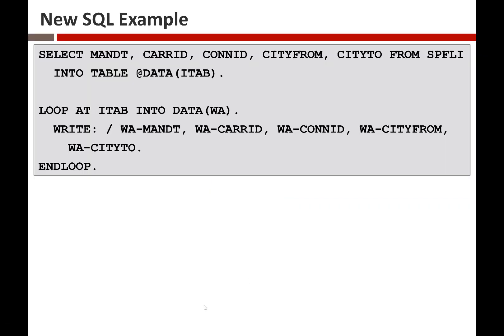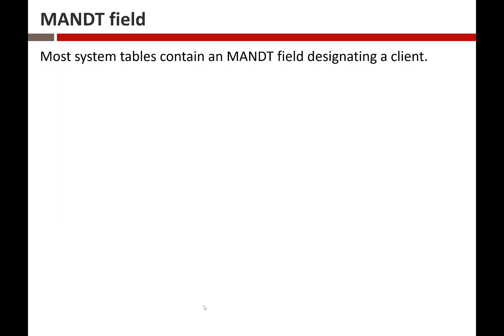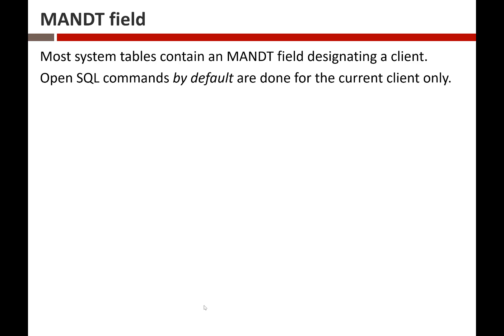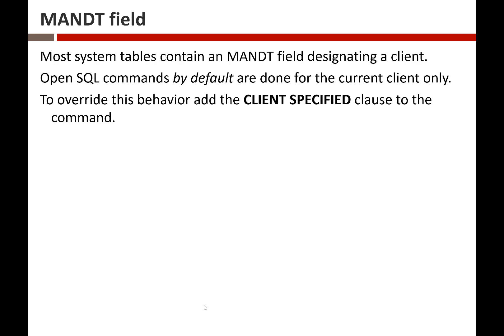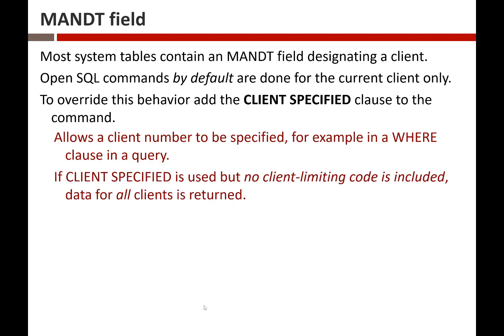Let's go back to what I was talking about with the MANDT field. Most system tables have a MANDT field that designates the client number. OpenSQL commands by default are done for the current client only. To override this behavior, we add the CLIENT SPECIFIED clause to the command. What this does is allow us to specify a client number. Or if I don't specify a client number, I get back all of the clients. If CLIENT SPECIFIED is used but no client limiting code is included, I get back all the clients.